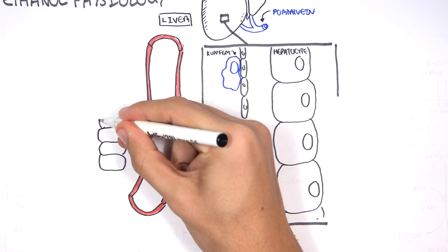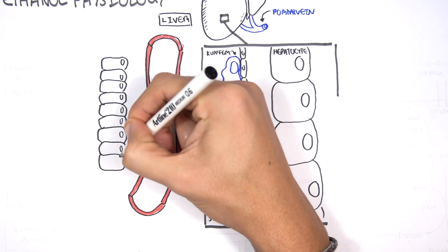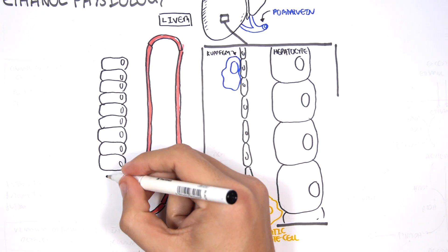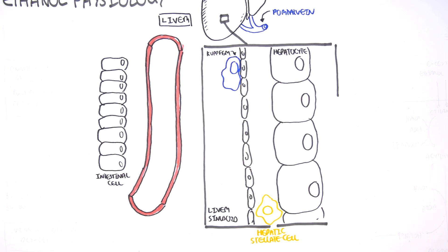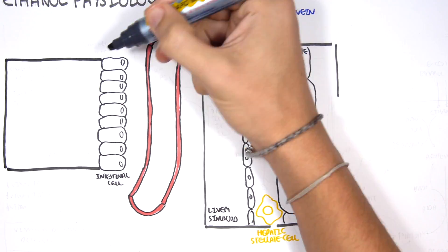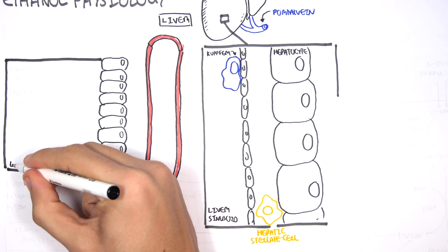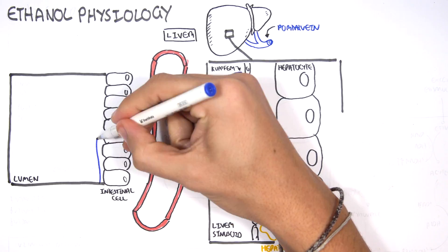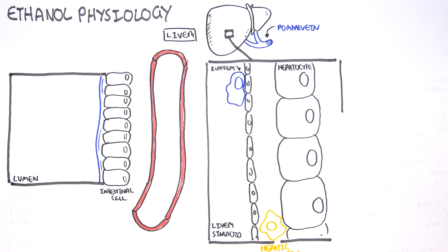Here are your intestinal cells - intestinal cells of the stomach and the small intestine, for example. Here is the lumen. On these intestinal cells there is mucus, and mucus is a barrier - it helps as a barrier from microbes and things like that.